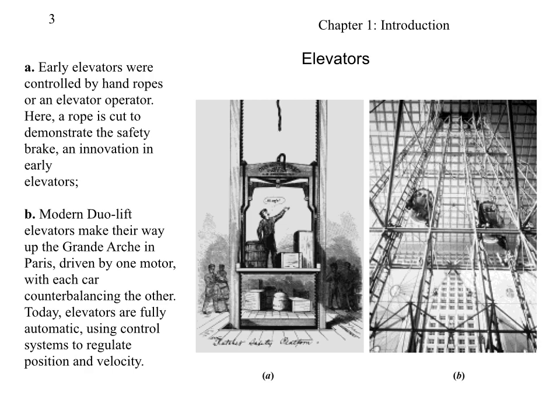The simplest example of a control system is the elevator. If we want the lift to be at the fourth floor, we press the button — that is the input, what is desired — and the lift comes to the fourth floor. In this diagram you can also see early elevators: in the first one, a rope is cut to demonstrate the safety brake, an innovation in early elevators. Another early elevator used in Paris was driven by one motor with counterbalancing.